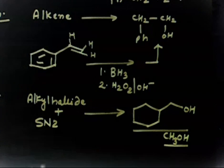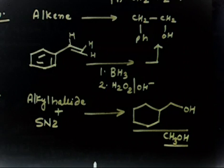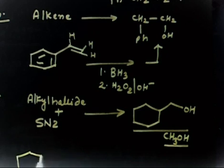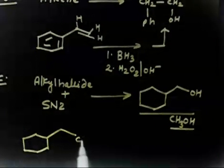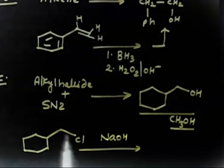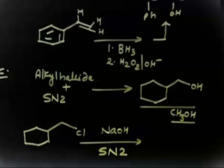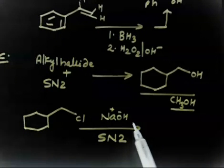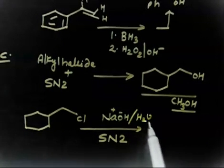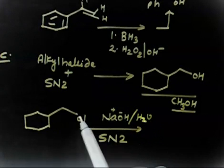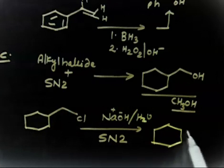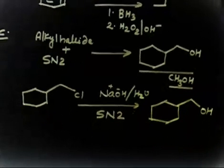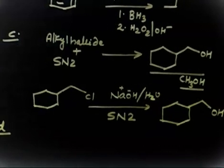How can you prepare cyclohexyl methanol using SN2 on an alkyl halide? Take cyclohexyl-CH₂Cl as the alkyl halide and treat with NaOH. This is a primary alkyl halide, so SN2 happens. OH⁻ attacks as a nucleophile and Cl⁻ leaves. Finally you get the desired cyclohexyl methanol product. This is an easy one. Now let us do Part D.